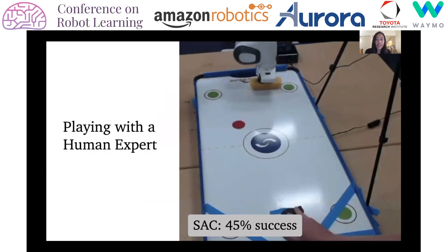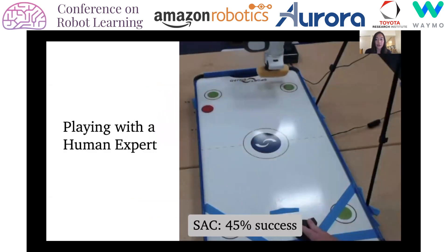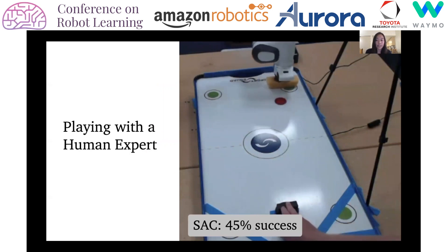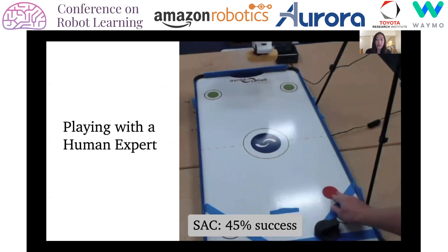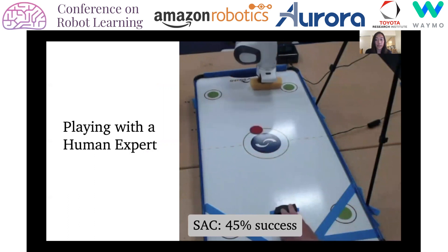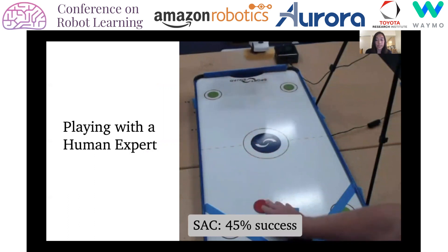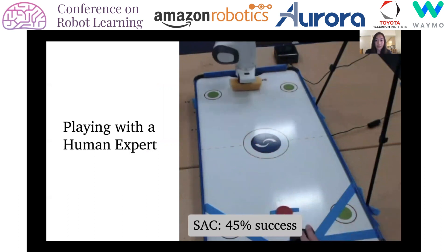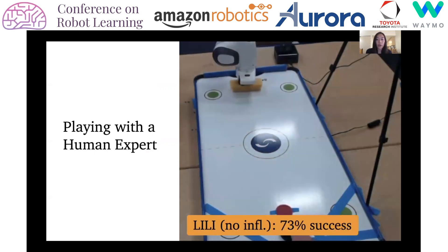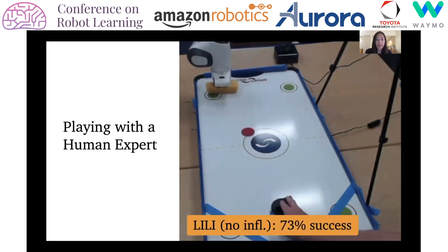Finally, we tested the policies learned by Soft Actor Critic and LILY without influence against a human expert. The human expert follows the same strategies as the robot opponent, but with imperfect aim. The Soft Actor Critic agent's success rate is 45%, while LILY's is 73%.